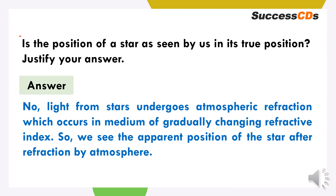Is the position of a star as seen by us its true position? Justify your answer. Aisa nahi hota. Kyunki atmospheric refraction ki vajay se, medium gradually change hota hai. Jiski vajay se, passing through, jo hamari light hoti hai, refractive indices — uspe kaafi farak padta hai. Jiski vajay se apparent position of the star after refraction by atmosphere, uski true position ke baare mein information bilkul sahih tarikey se provide nahi kar pati.